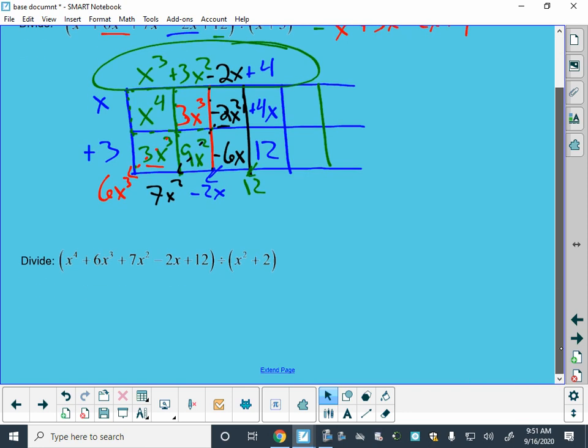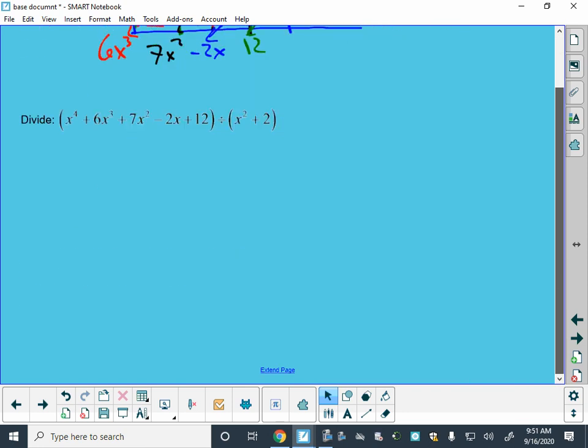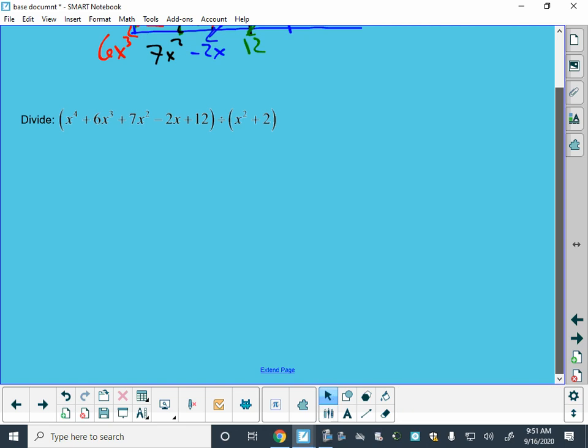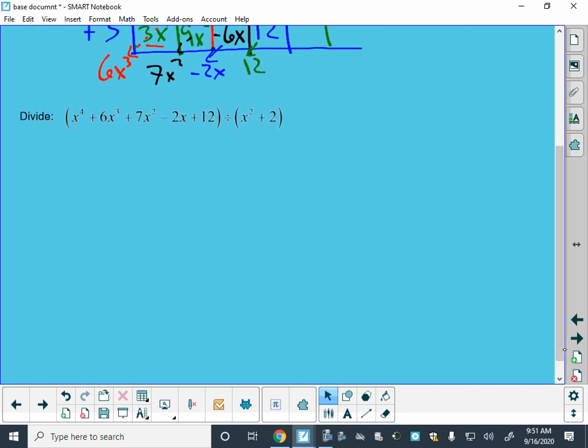Let's do one more example here. A similar looking problem except for I have a quadratic that I'm dividing by. And I did this one especially because my one side of the rectangle then has to be an x squared plus 2.